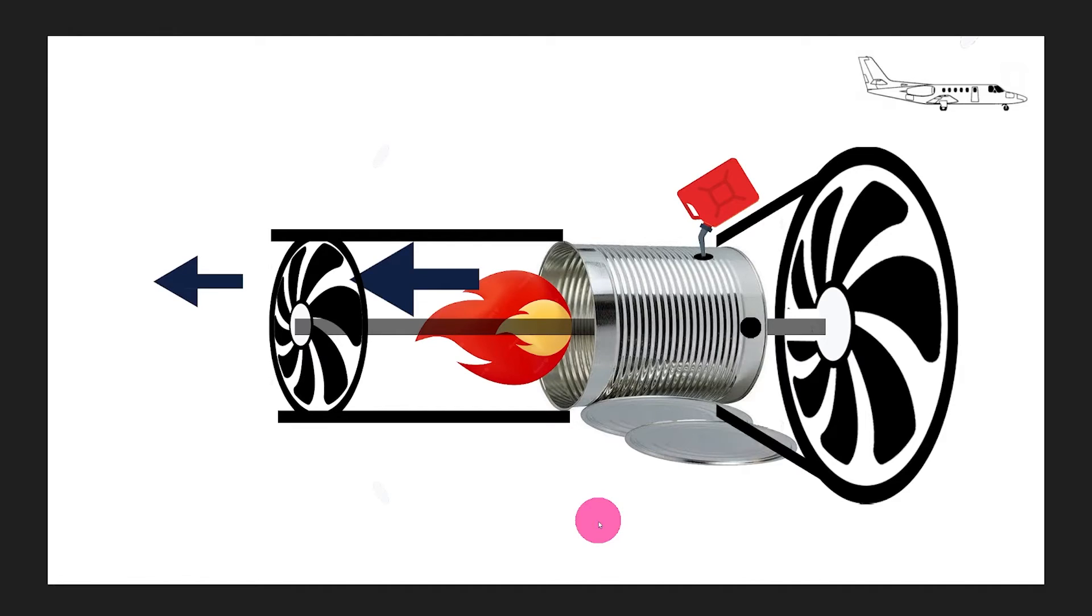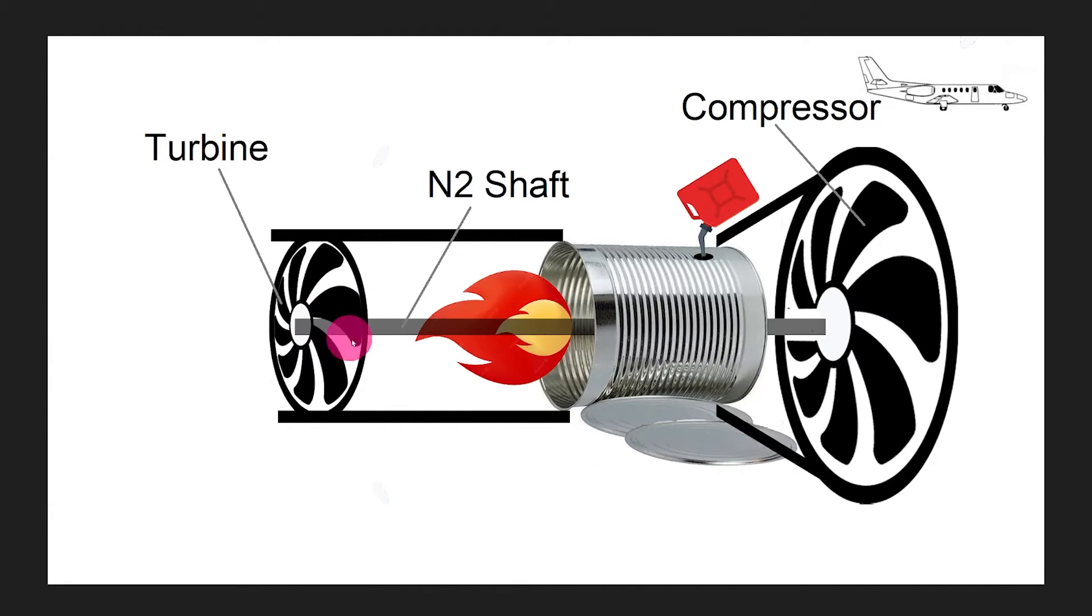So let's recap and add some terminology. Any fan that absorbs energy from the fire, like our fan in the back, is called a turbine. And the fan in the front is called, you guessed it, a compressor.